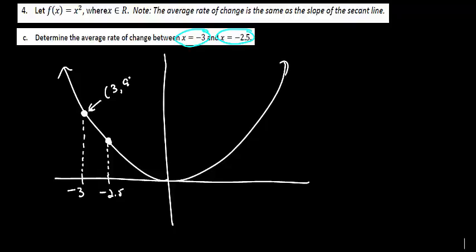So this guy is at negative 3, positive 9. And this guy is at negative 2.5, and then of course we got a square of that guy which looks like 6.25.